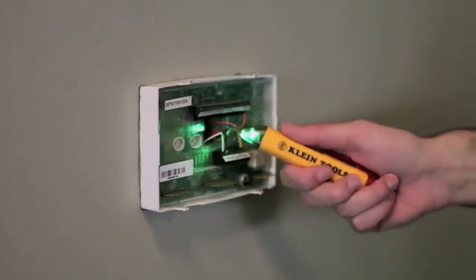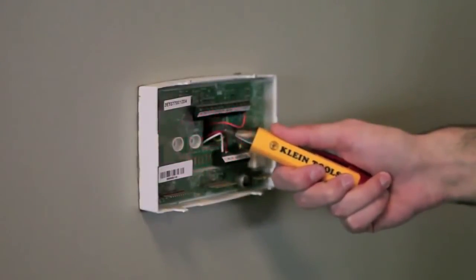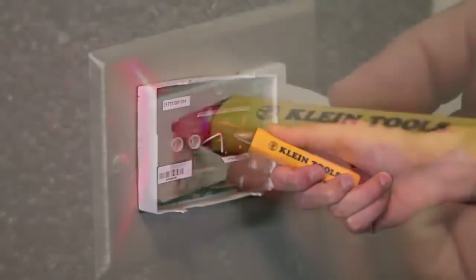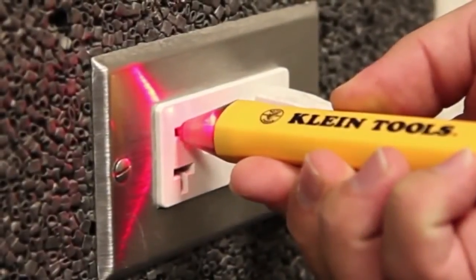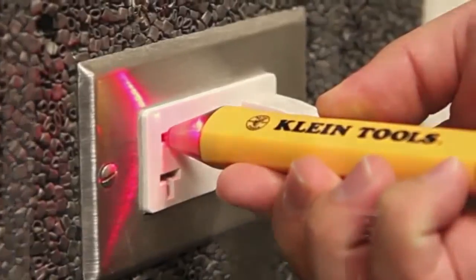The NCBT2 indicates low voltage with a low-pitched beeping tone and blinking red LED light. A steady red LED light and low-pitched beeping tone indicates the tester is detecting standard voltage.